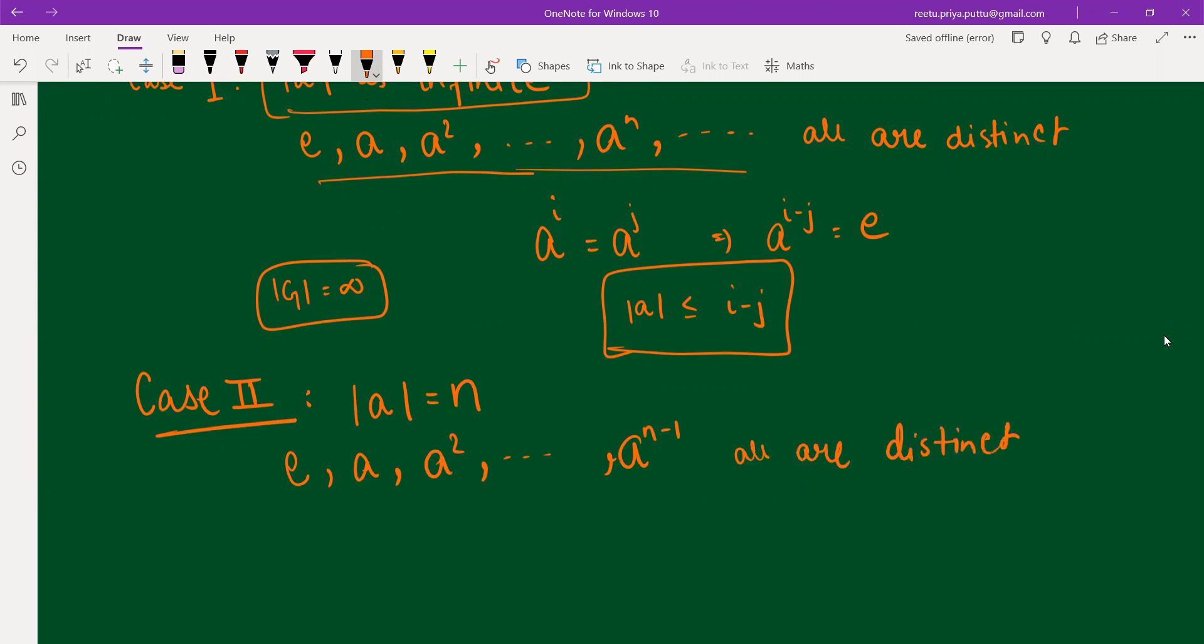Why? Because if not this, then order of A will be less than n. Suppose if a² is identity, then order of A will become two, but we have considered it as n. So this is not the case. That's why these all are distinct. And this all will belong to G.